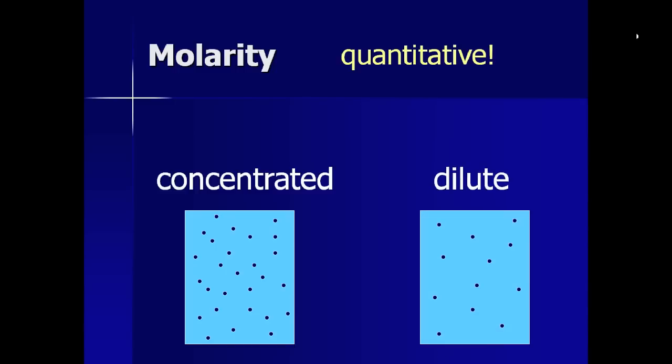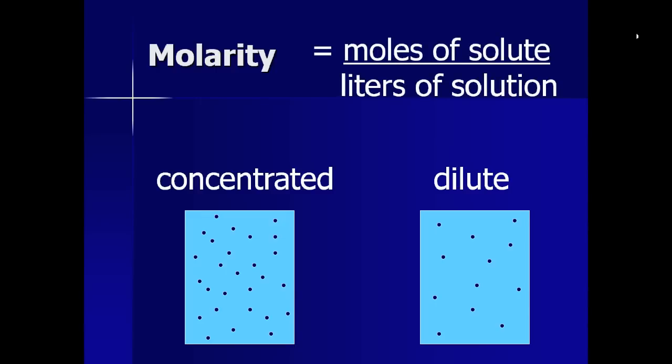Simply describing a solution as concentrated or dilute is not very helpful when trying to predict the theoretical yield of a reaction involving a solution. So we use molarity to get back to the numbers. Molarity is a value that indicates a ratio between the moles of solute per liter of solution.